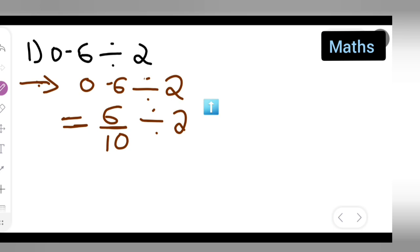Write it as it is. Now, this is equal to what? I can write this as 6 upon 10 as it is. Then, divide by 2. I have to divide this 6 upon 10 by 2.